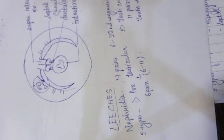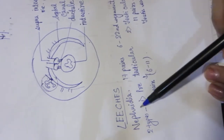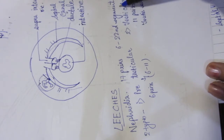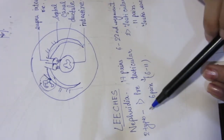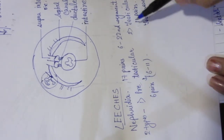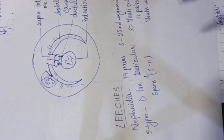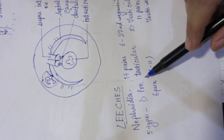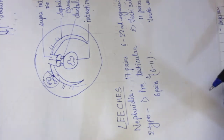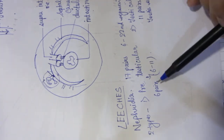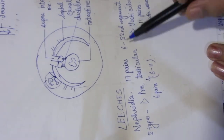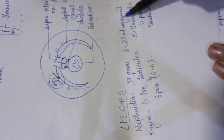Coming to the last organism — leeches. In leeches, nephridia are 17 pairs, present in the 6th to 22nd segment. There are two types: pre-testicular and testicular. The pre-testicular nephridia, which are in segments where there are no testes, are only 6 pairs, present in the 6th to 11th segment.